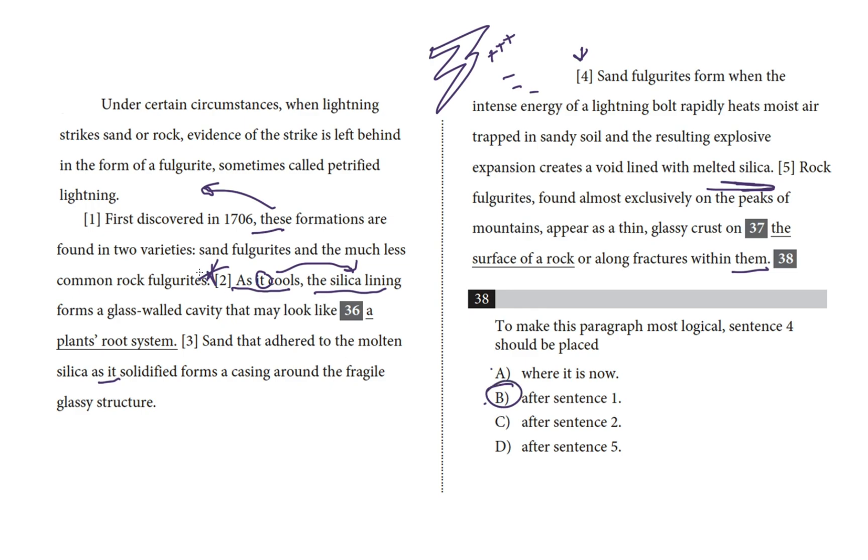We can also see that most of the other sentences in the paragraph are about sand fulgurites, until sentence five, which transitions to a discussion of the other kind, rock fulgurites. So that also plays into the logical sequence of events. Sentence one introduces the two varieties of fulgurite, sand and rock. Then you have a few sentences about sand fulgurites, followed by one sentence about the much rarer rock kind.